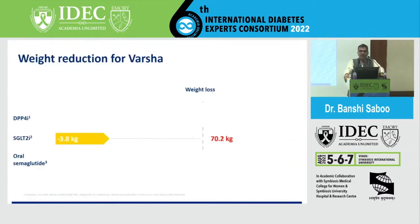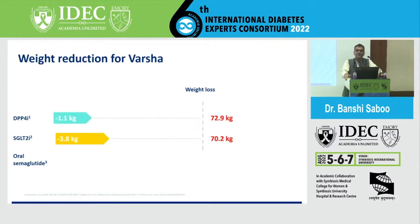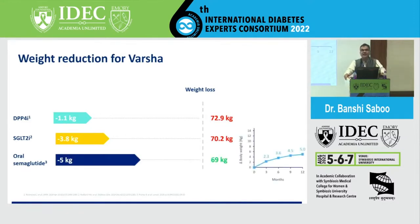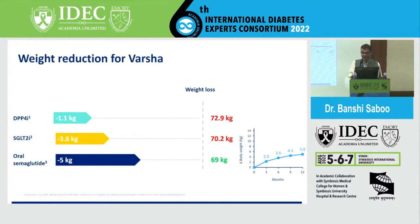Weight reduction is very important. SGLT2 inhibitors also reduce significant weight after metformin — average reduction of almost 5%, around 3.8 kg. With DPP4 it is more or less weight neutral, though with diet control we can still reduce weight around 1-2 kg. But semaglutide weight reduction could be around 5 kg, and we have seen even more than that clinically. For patients who say they can't resist food, adding GLP-1 is very beneficial — satiety increases, food intake decreases significantly, and weight reduces very significantly.